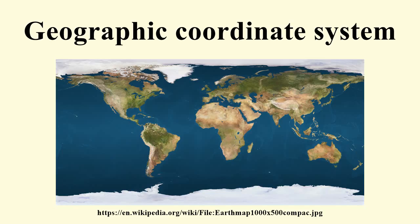These changes are insignificant if a local datum is used, but are statistically significant if a global datum is used. Examples of global datums include the World Geodetic System, the default datum used for the Global Positioning System, and the International Terrestrial Reference Frame used for estimating continental drift and crustal deformation. The distance to Earth's centre can be used for very deep positions and for positions in space. Local datums include the North American Datum, the European ED-50, and the British OSGB-36. In the United Kingdom, WGS-84 differs at Greenwich from OSGB-36 by approximately 112 metres.